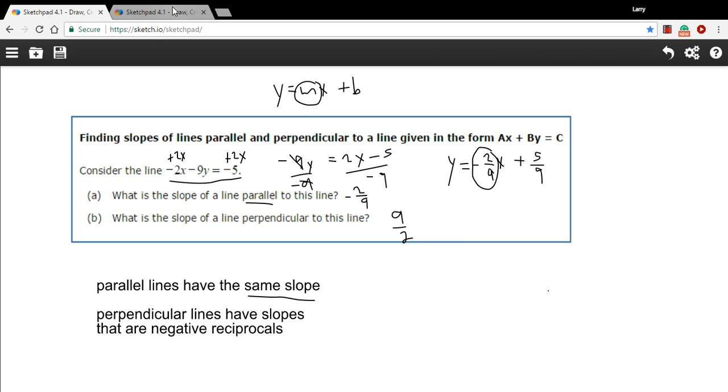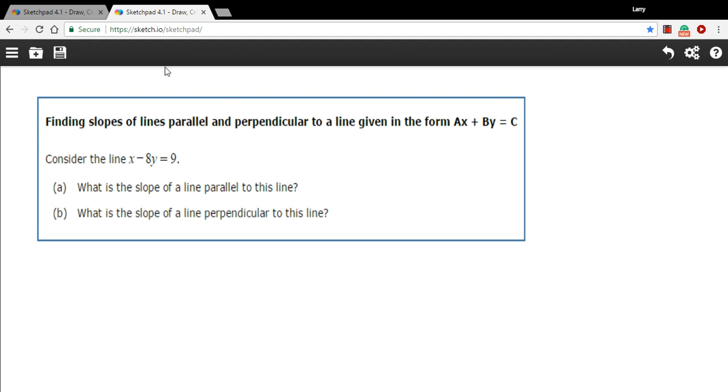Let's try one more similar. So here, our equation is x minus 8y equals 9. First thing I want to do is find the slope of this.